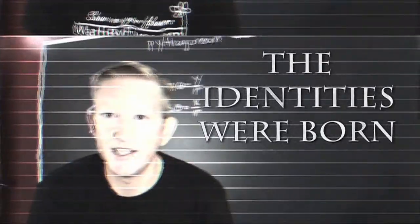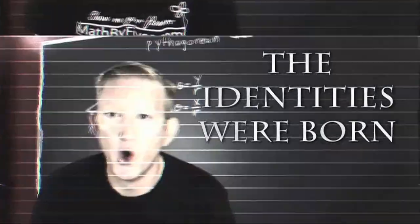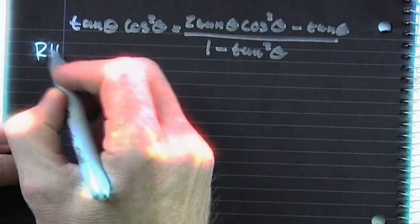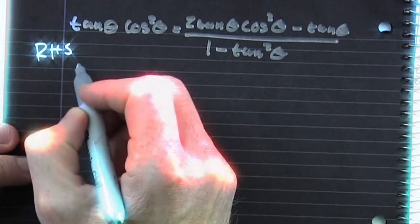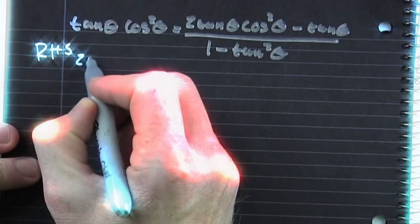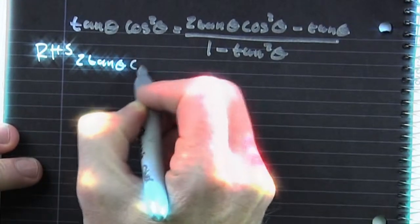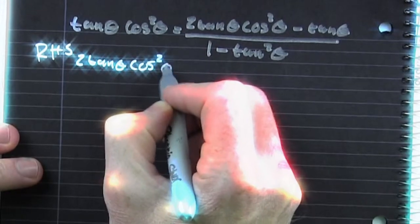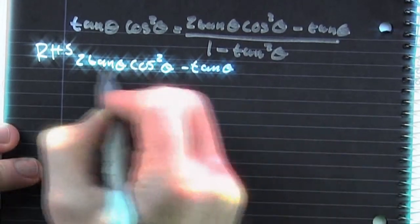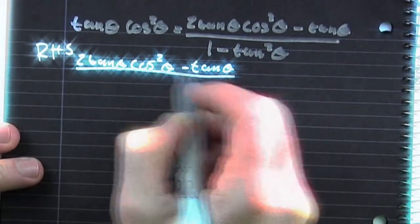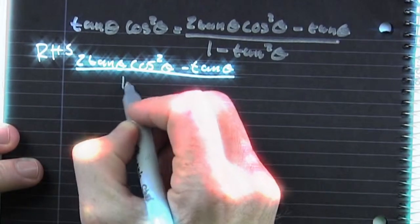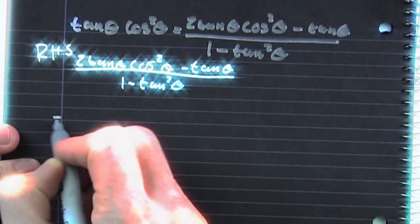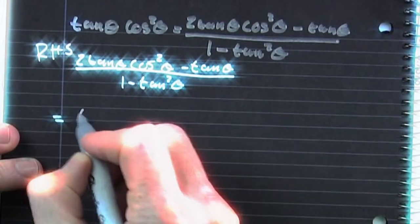And this is where the identities were born. We are trying to prove the tangent of theta times the cosine squared theta is going to be 2 times the tangent theta cosine squared theta minus the tangent theta, all over 1 minus the tangent squared of theta. So then we write that more complicated right-hand side.